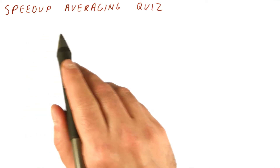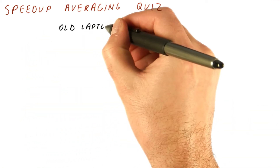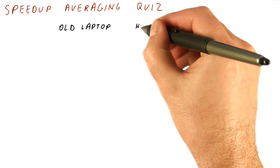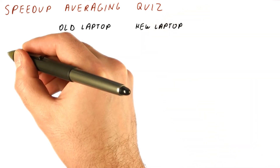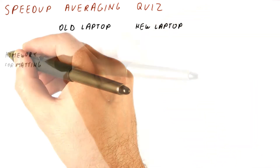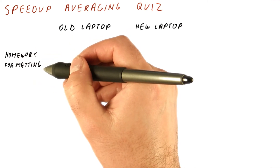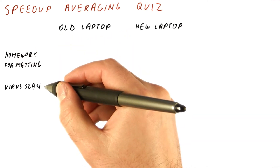Let's do a speed-up averaging quiz. Let's say we have an old laptop and a new laptop, and two applications that are representative of our workloads: a homework formatting application and a virus scan application.